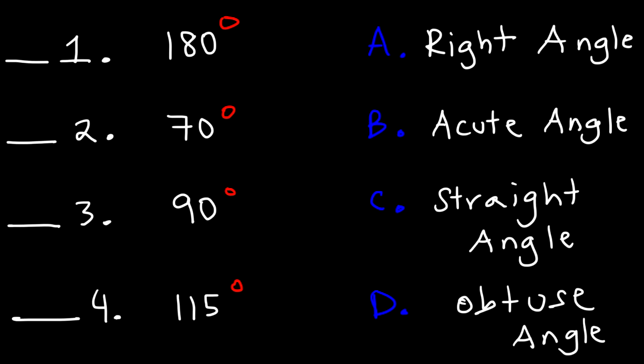Let's start with number one. If we have an angle of 180 degrees, which answer choice does that correspond to? Is it a right angle, acute, straight angle, or obtuse? If it's exactly 180, then it is a straight angle — so number one is answer choice C.